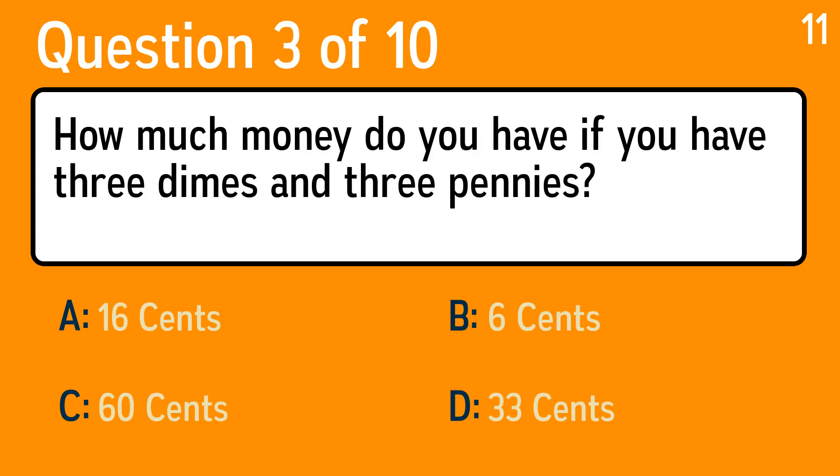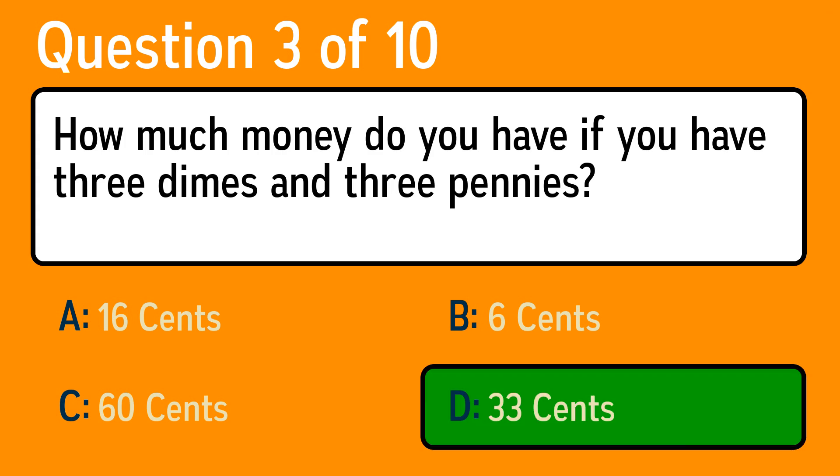Question 3, how much money do you have if you have 3 dimes and 3 pennies? The correct answer is D, 33 cents.